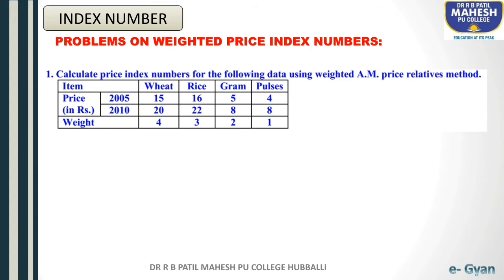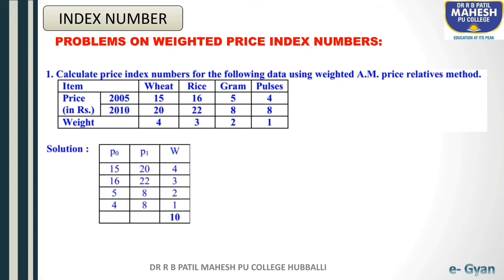The weights given are 4, 3, 2, 1. Observe the question — here we are solving examples on weighted price index numbers, and for this question you have to apply the weighted arithmetic mean. Price of 2005 means base year price, P0.